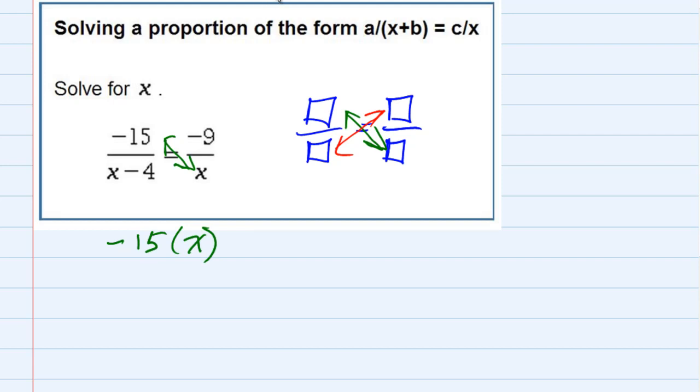If I multiply the other direction this way, I would have negative 9 times x minus 4. Notice I put the x minus 4 in parentheses because I'm going to need to distribute that negative 9 to each term.